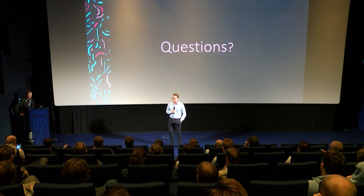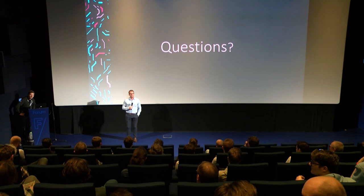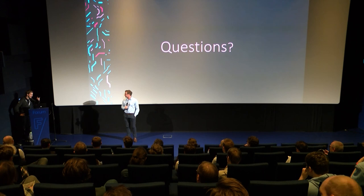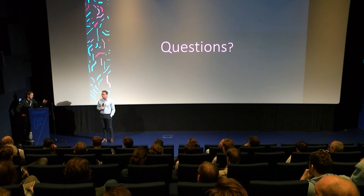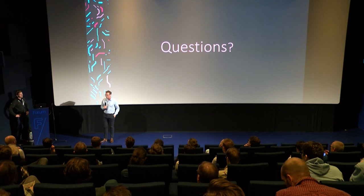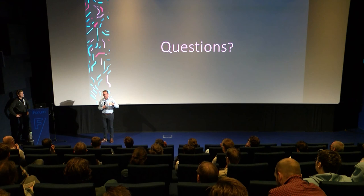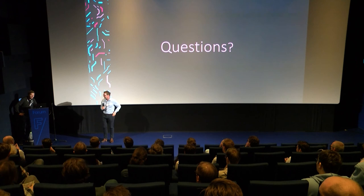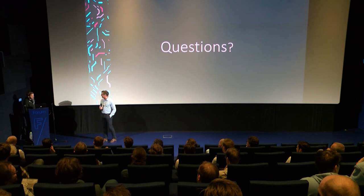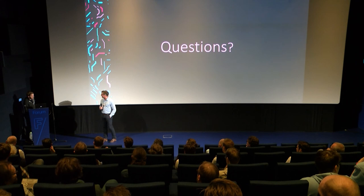Final questions wrap up the session. The speaker notes the no-GIL project is a proof of concept forked from Python 3.9 with the GIL removed, though it likely doesn't rewrite the entire standard library. The speaker receives a gift from the conference organization and the audience gives a round of applause.